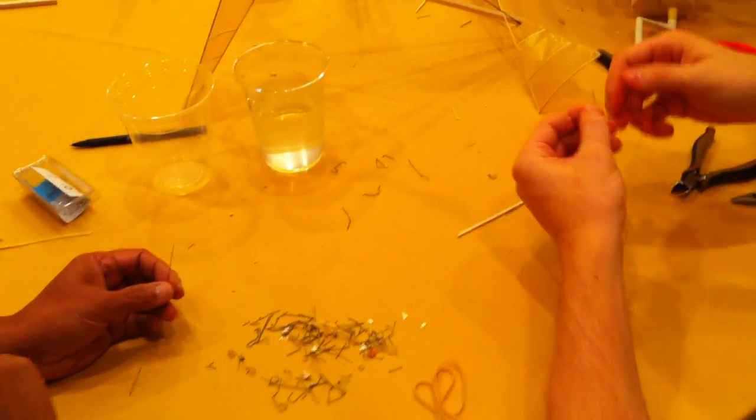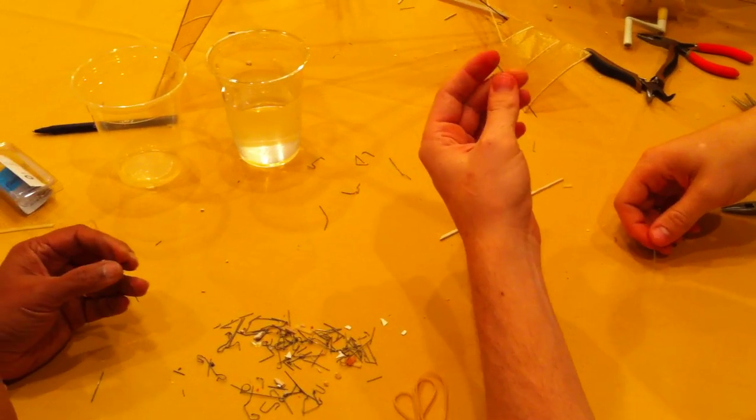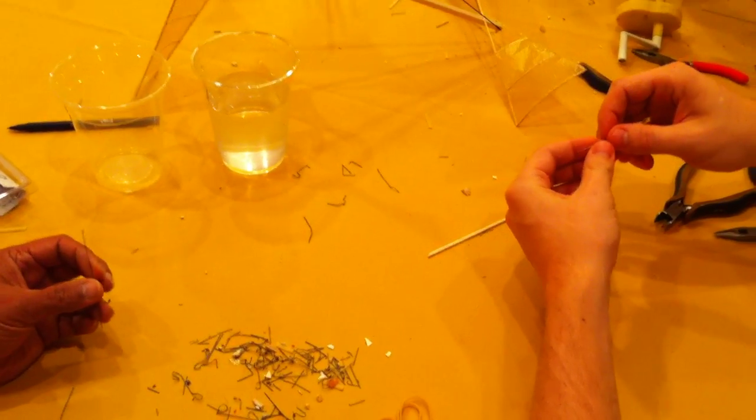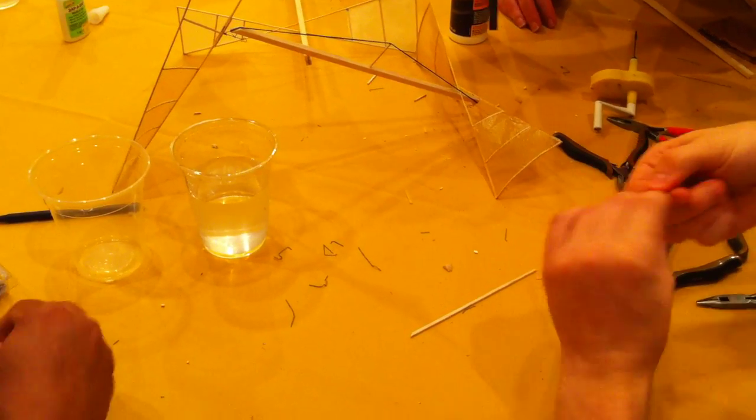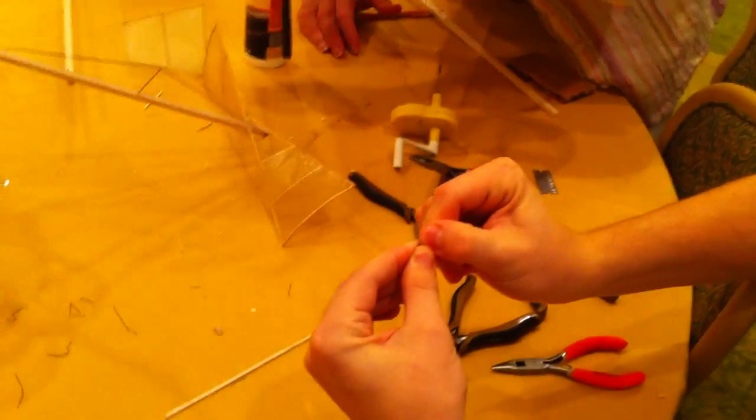So the first step you do here is you take your longer wire, I said about three inches long or so, and bend it over your mandrel, your round form, once.